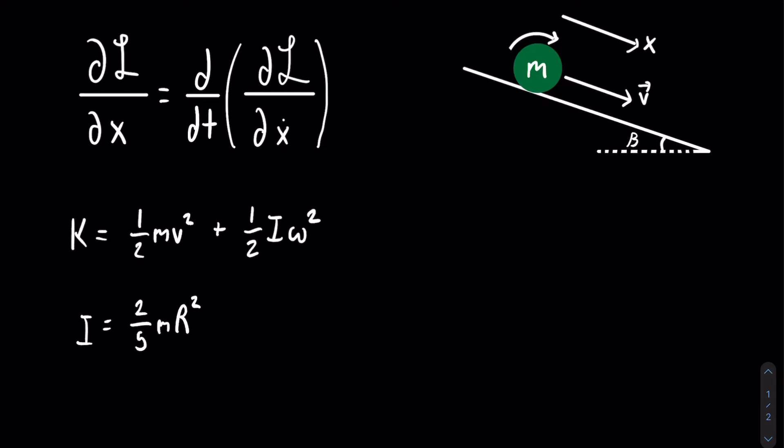So in our kinetic energy equation, we have two types of values, rotational and translational. Luckily, they are connected, and because the ball is rolling without slipping, we know that omega is going to be equal to v over r. Squaring both sides, we get that omega squared is equal to v squared over r squared. Also, like we usually do, we need to convert our velocity into our generalized coordinate system, so we change all v's to x dot.